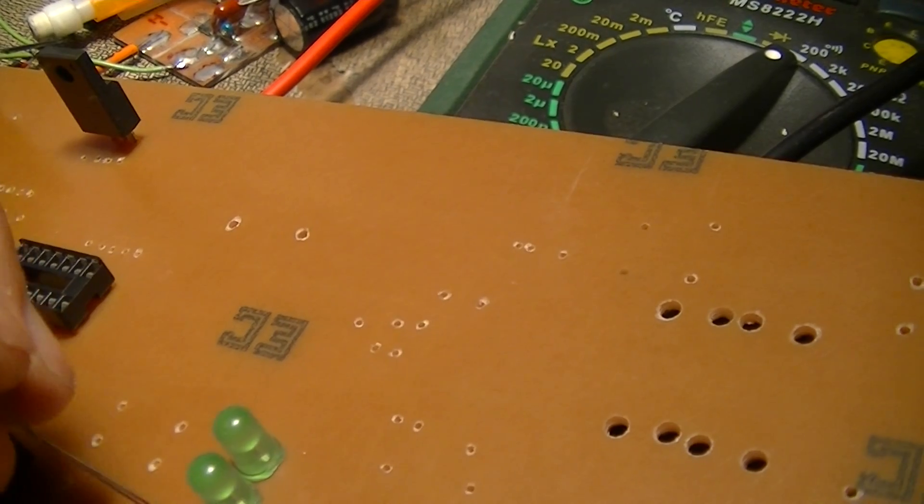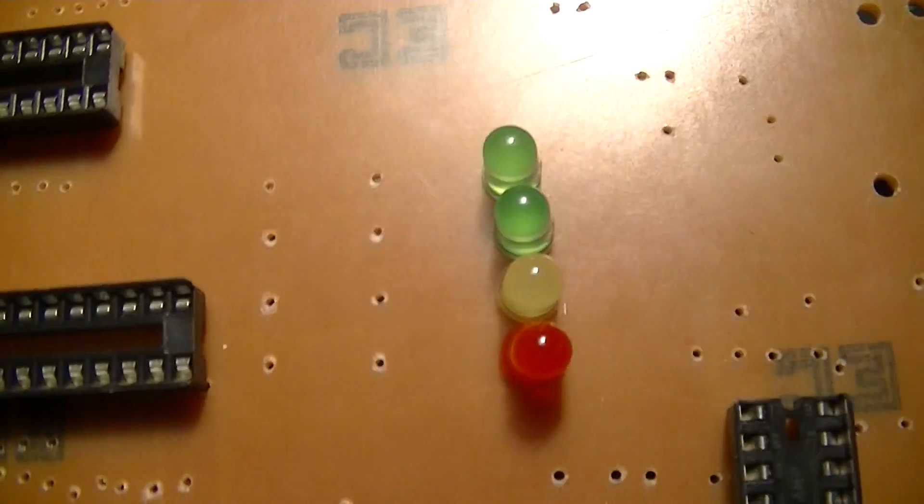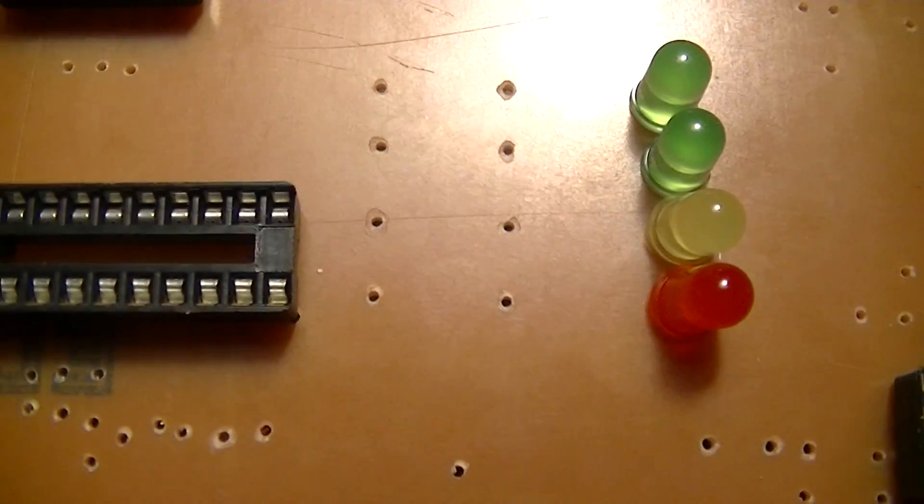For those of you who haven't been following the series of videos that I've been doing on this thing, that's what those four LEDs are going to be. Then there's the four current limiting resistors for them.